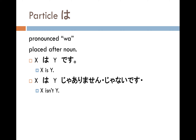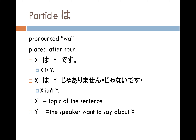For a negative sentence: X-wa Y-ja-arimasen, or X-wa Y-ja-nai-desu. X is the topic of the sentence — the subject. Y is what the speaker wants to say about X.